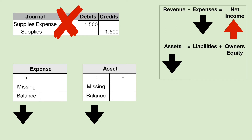Now let's look at the income statement. If expenses are understated, net income will be overstated, because if you subtract a number that is too small, your answer will be too large. The error in net income — the overstatement of net income — will be transferred to retained earnings in the closing process. So owner's equity will be overstated also.